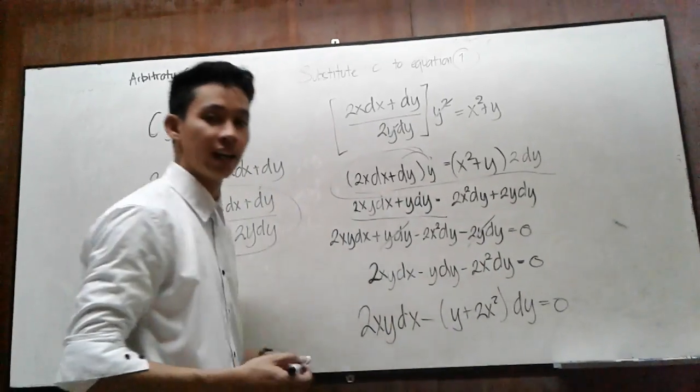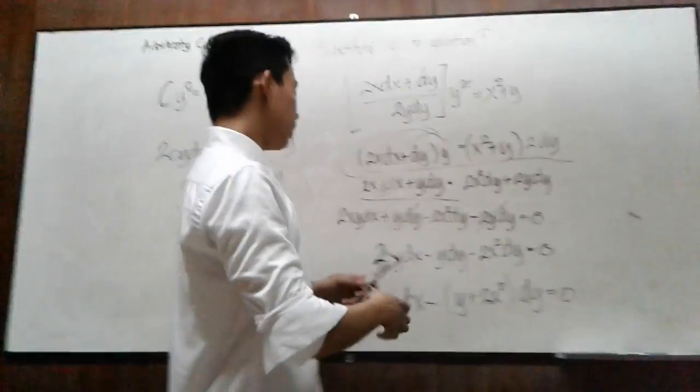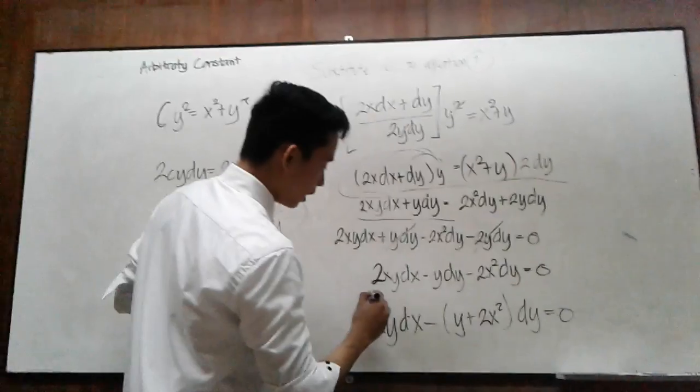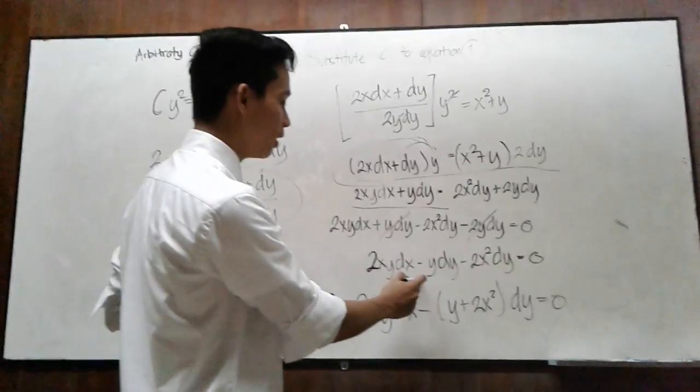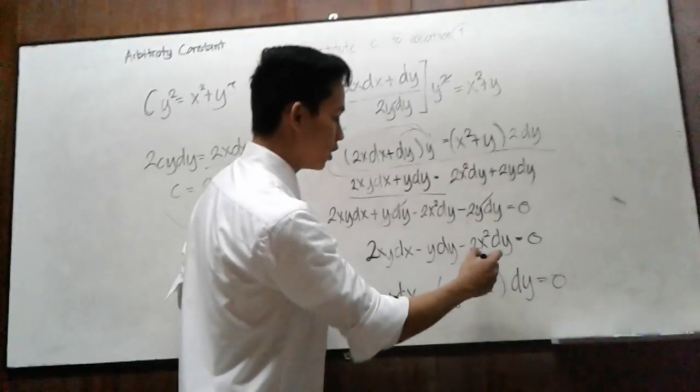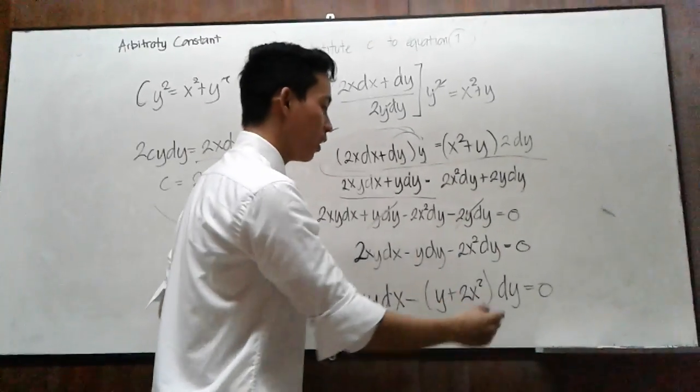This leaves you with negative y dy. The simplified form of this equation is 2xy dx minus y dy minus 2x squared dy equals 0.